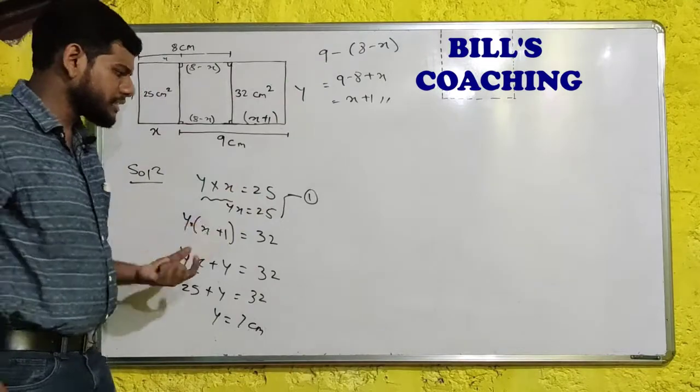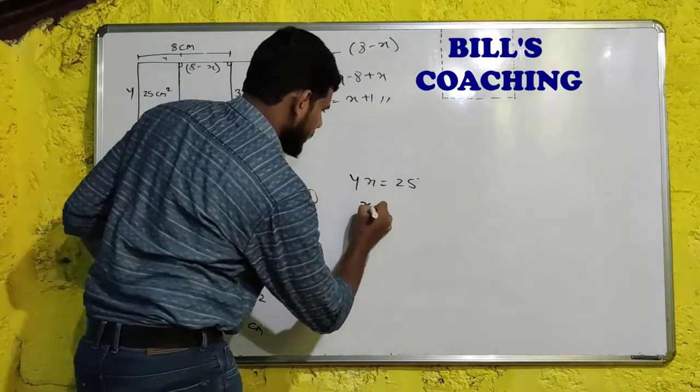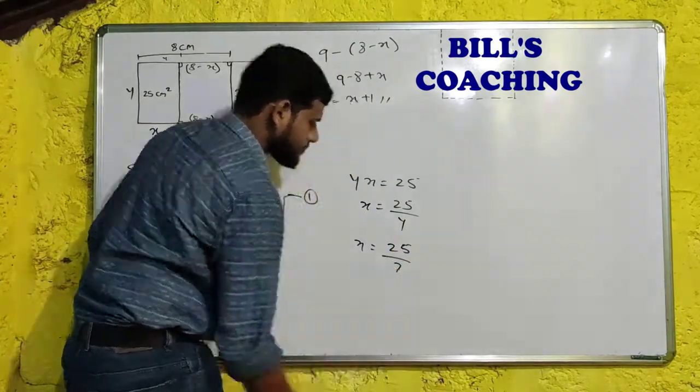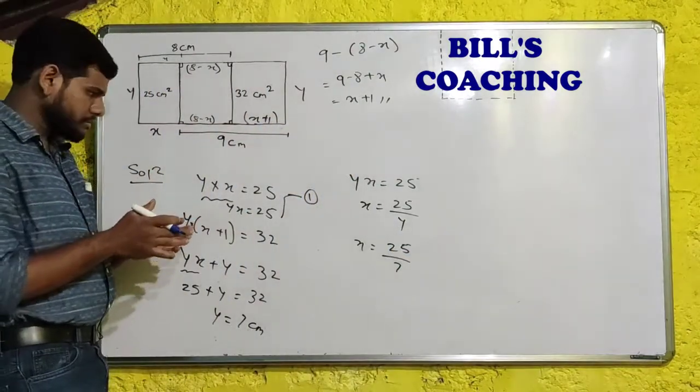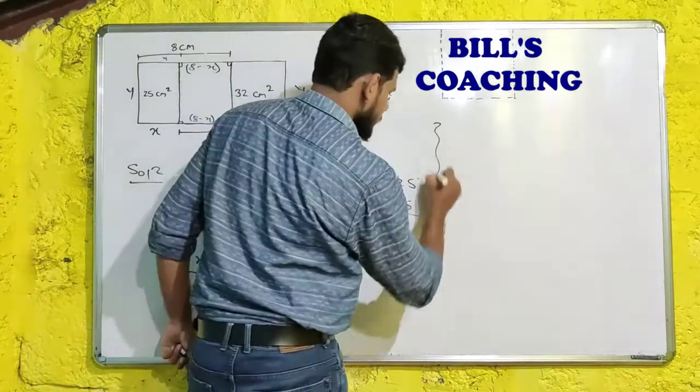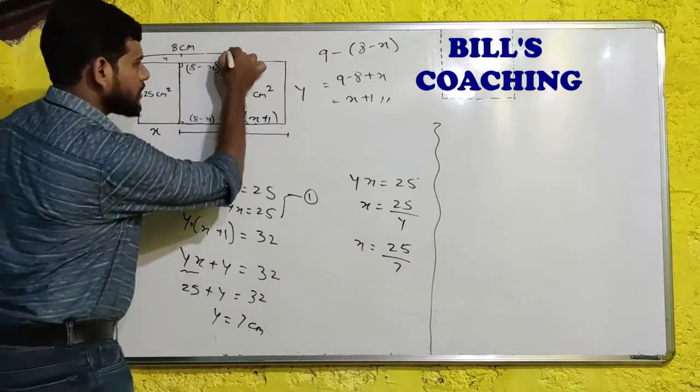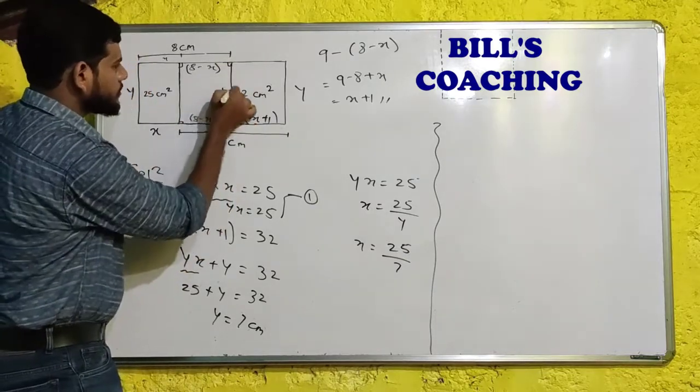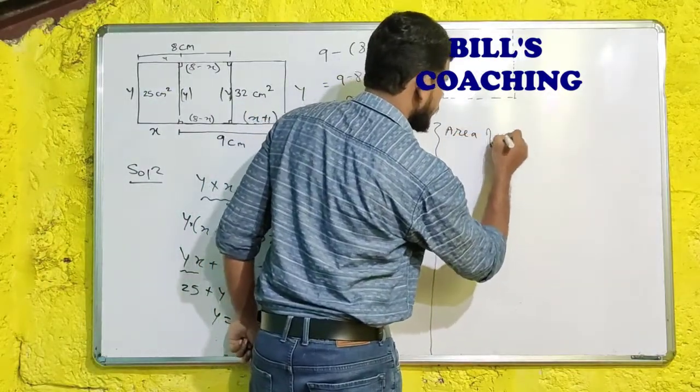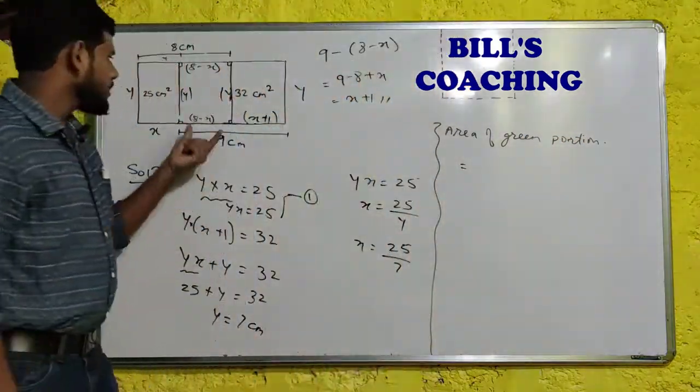So we got y is 7 centimeters. Now simple thing. We can substitute y over here to get the x. So what is yx? Yx is equal to 25. So substitute x, so we can say x is equal to 25 upon y. So x will get us 25 upon 7. Right? Now this is 25 upon 7.